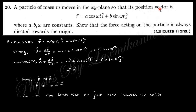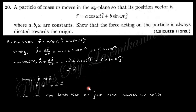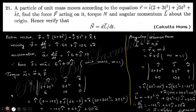Next question: a particle of mass m moves in the xy-plane subjected to the given position vector equation, such that the force always acts directed toward the origin. Force equals mass times acceleration. Taking the first derivative of the position vector gives velocity, the second derivative gives acceleration. Force equals mass times acceleration; the negative sign of r indicates the direction is toward the origin.